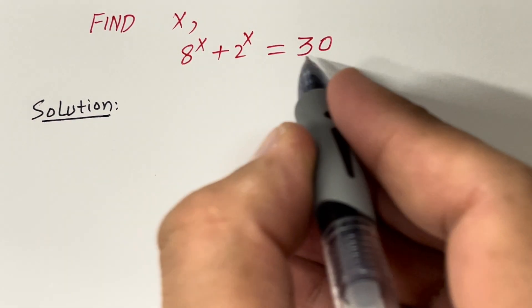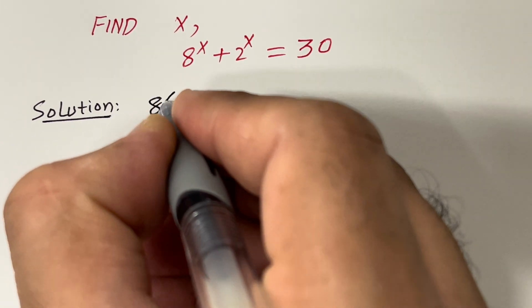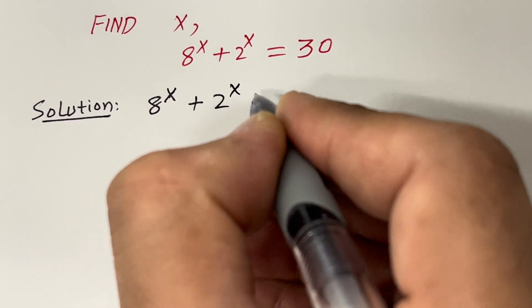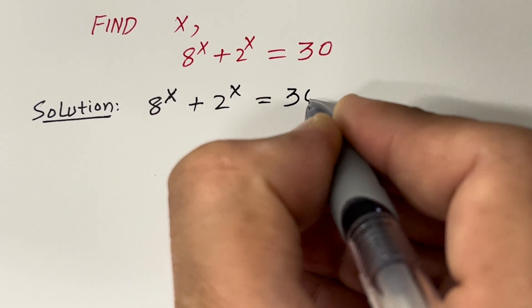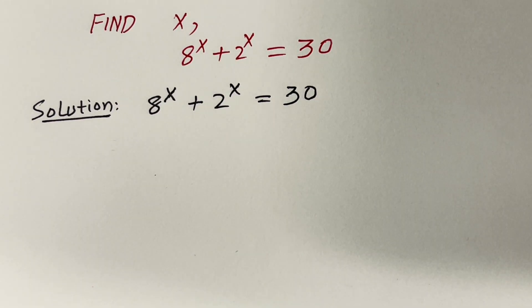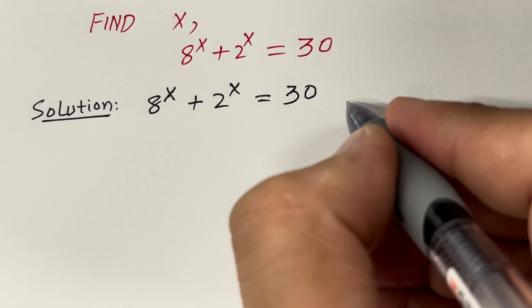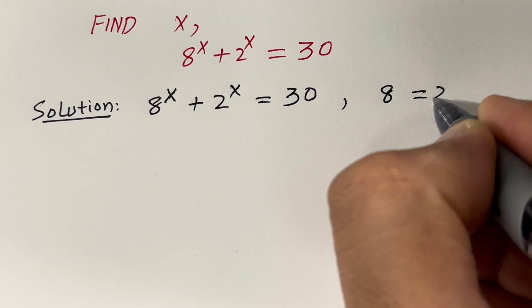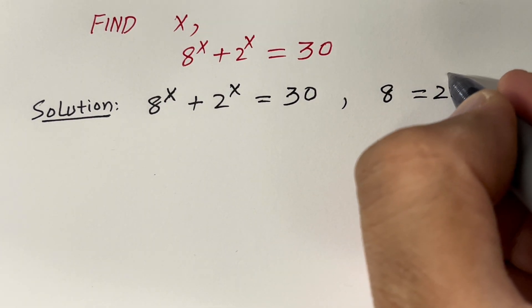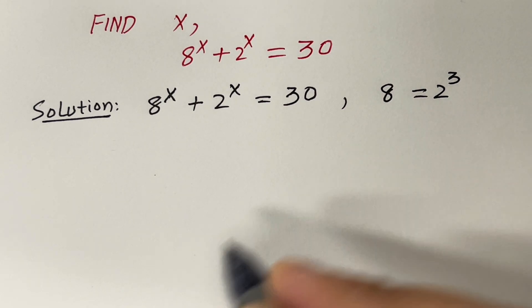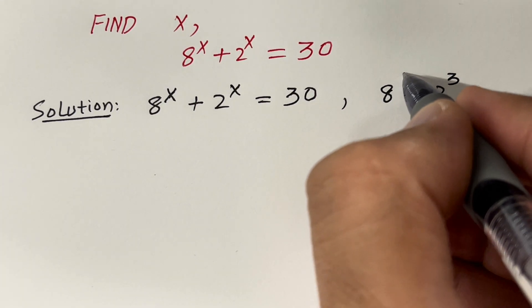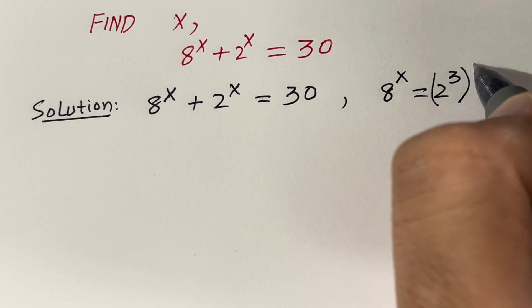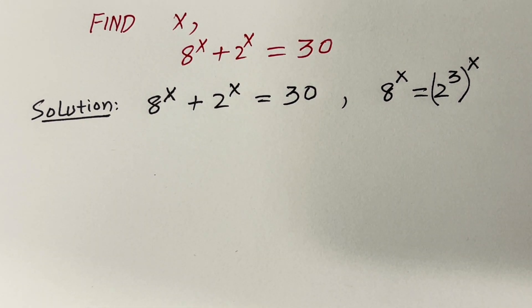The given equation is 8 raised to the power x plus 2 raised to the power x is equal to 30. We know that 8 is equal to 2 raised to the power 3, therefore 8 raised to the power x will be equal to 2 raised to the power 3, raised to the power x.